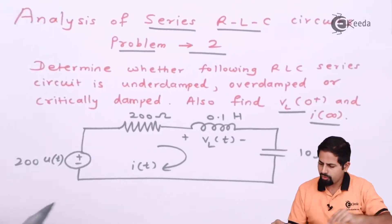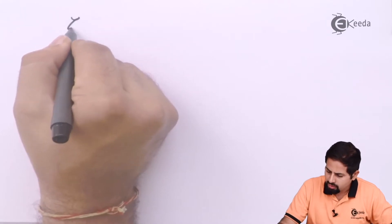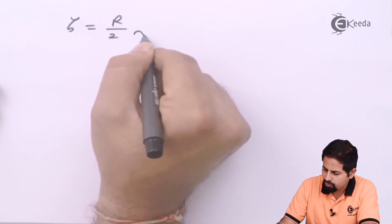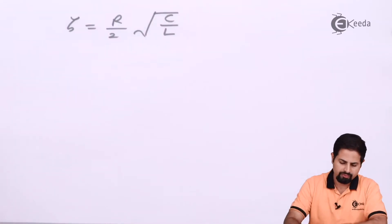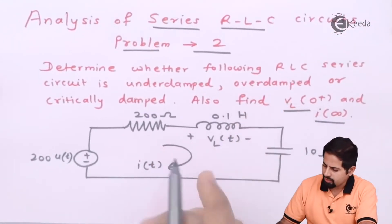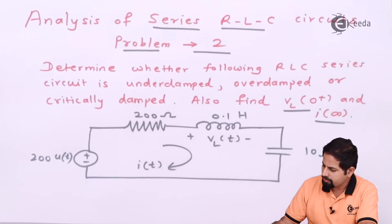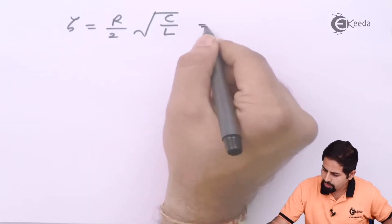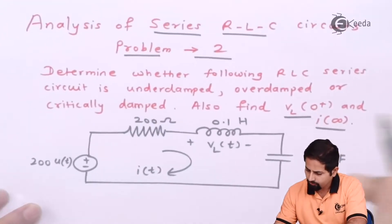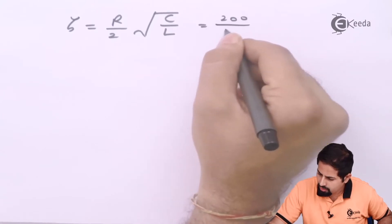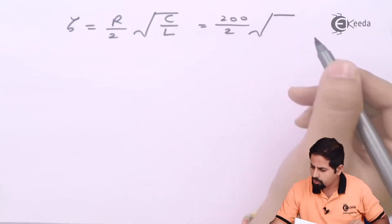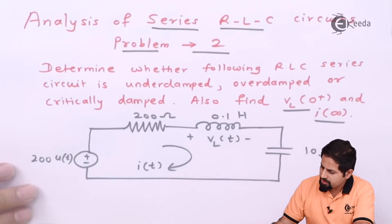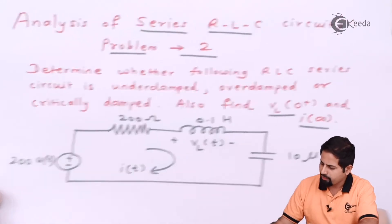We know that the formula for zeta is nothing but R divided by 2, multiplied by root of C by L. Now R is given as 200 ohms, C is 10 microfarads, and L (inductance) is 0.1 henry. So I will put here: 200 divided by 2, into root of C divided by L, that is 10 microfarads divided by 0.1 henry.